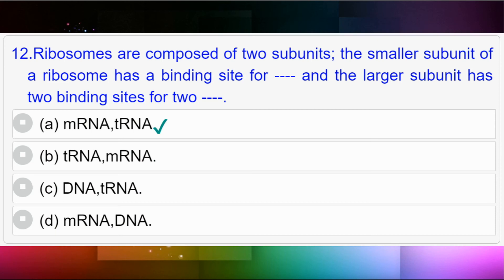Question number twelve: Ribosomes are composed of two subunits. The smaller subunit of a ribosome has a binding site for — and the larger subunit has two binding sites for two — option A: messenger RNA, transfer RNA; option B: transfer RNA, messenger RNA; option C: DNA, transfer RNA; option D: messenger RNA, DNA. Answer to question number twelve is option A: messenger RNA, transfer RNA.